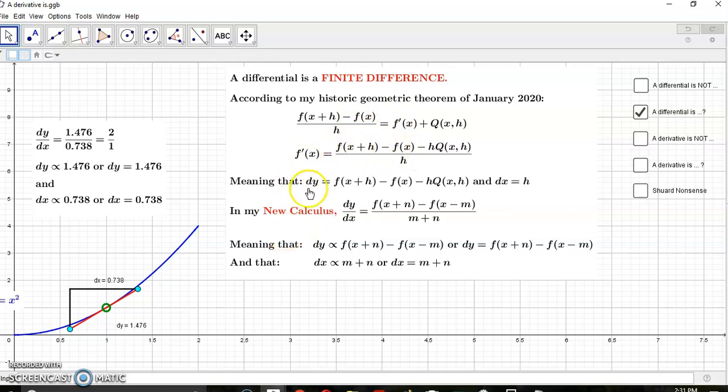And according to my geometric theorem, you can rewrite f prime of x as what you see on the right hand side, meaning that dy is equal to this expression and dx is equal to h, or rather that dy is proportional to this expression and dx is proportional to h.